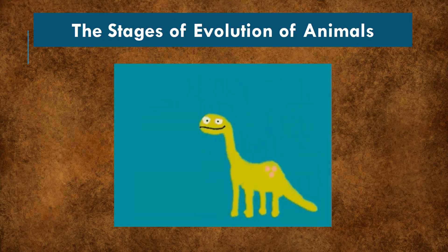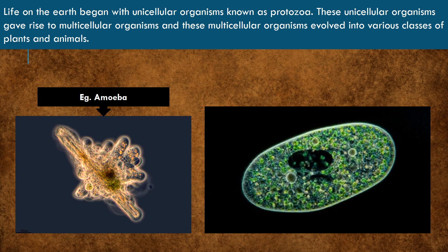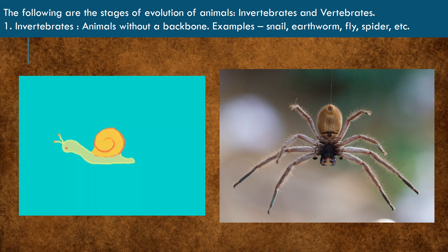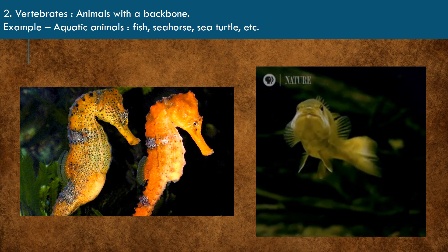The stages of evolution of animals. Life on earth began with unicellular organisms known as protozoa. These unicellular organisms gave rise to multicellular living things. The multicellular organisms developed slowly and various classes of plants and animals came into being. Animals without a backbone are called invertebrates. For example, snail, earthworm, fly, spider, etc.